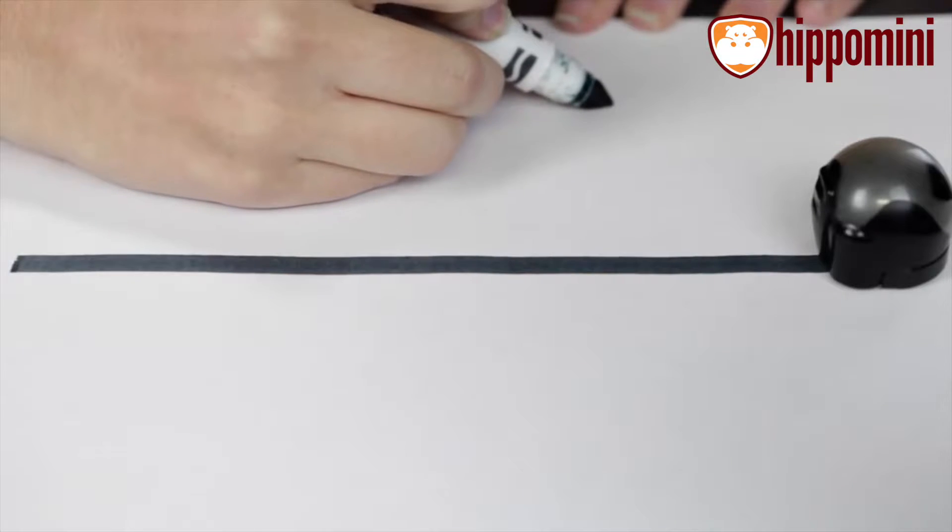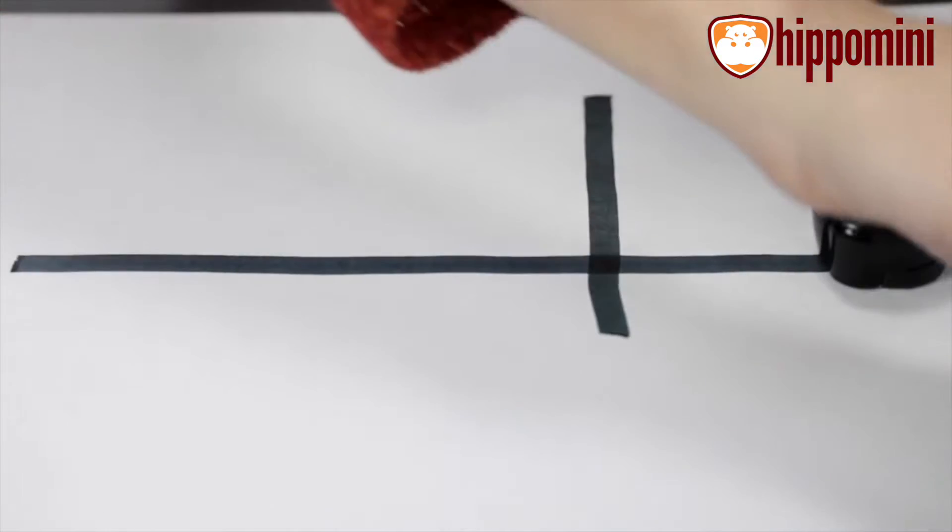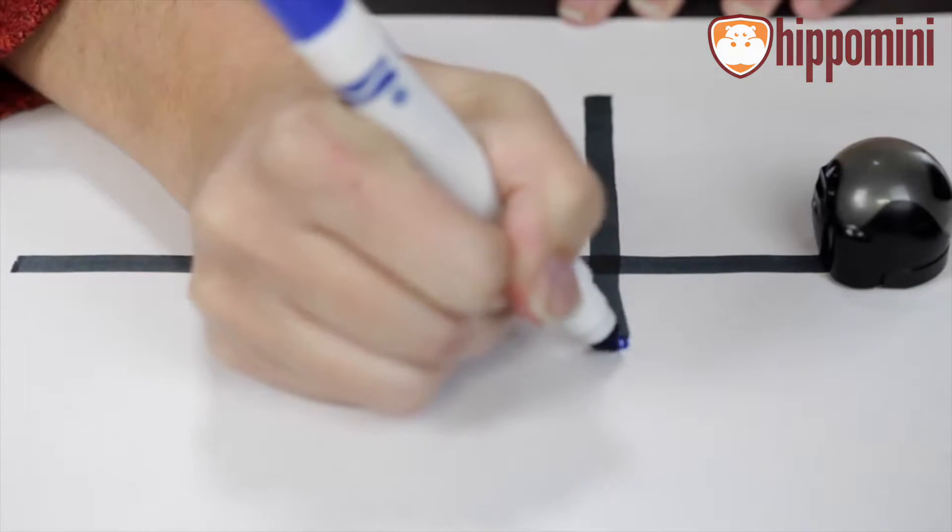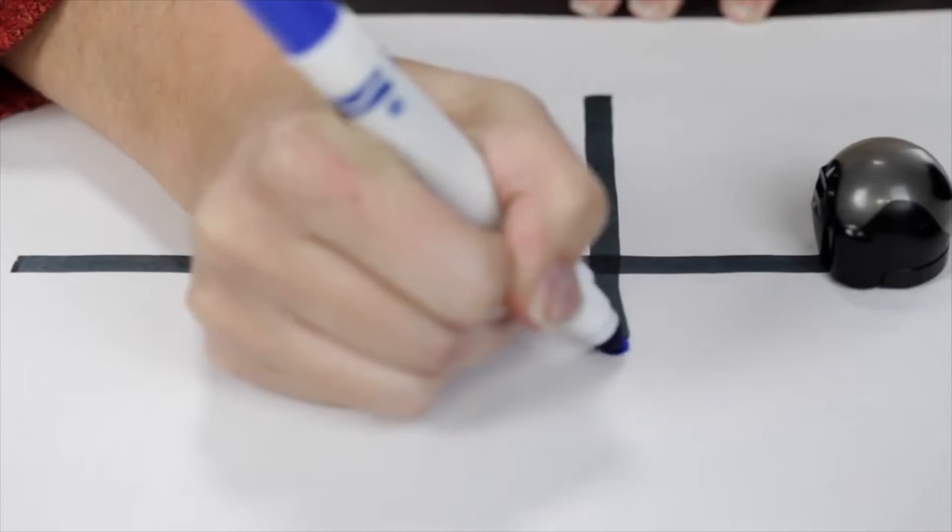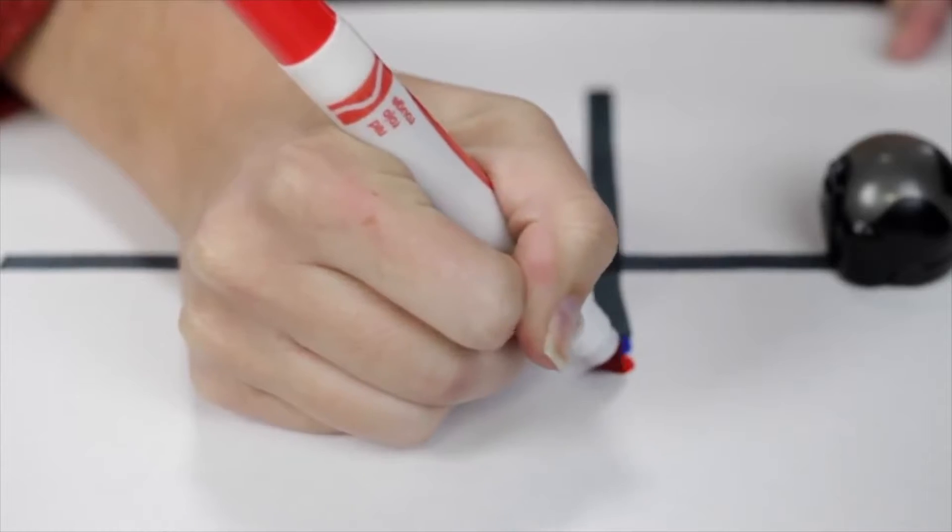First we're going to start off with a black line and then we're going to draw in a U-turn code. Just remember that in order for the code to work you need to have black at the very beginning and the end of the code and then the code in the middle.